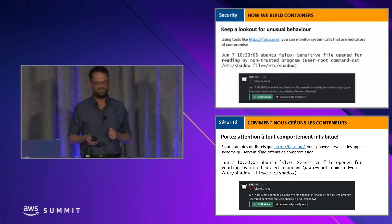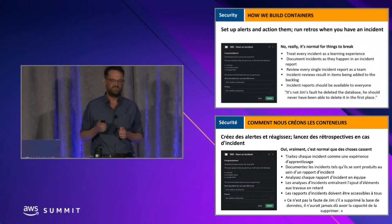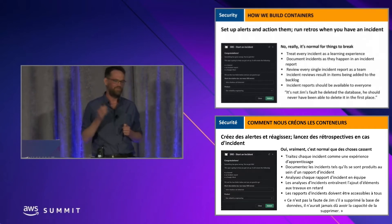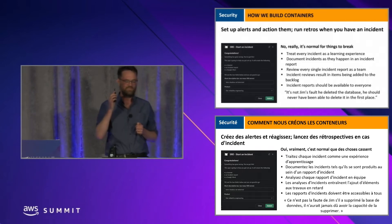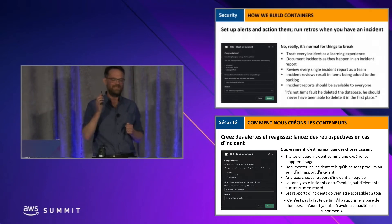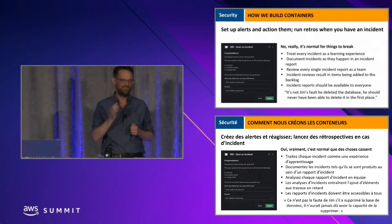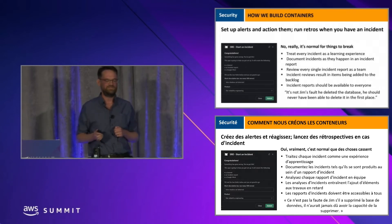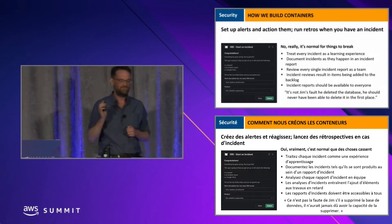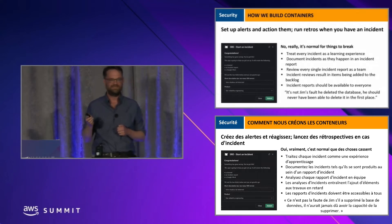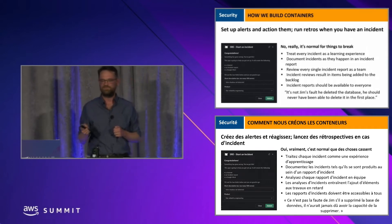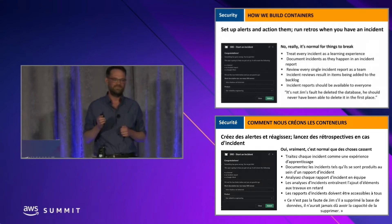My last recommendations are probably the most important: set up alerts and action them. When there is an alert, run retros, and please make it a blameless post-mortem. It's normal for things to break. Treat every incident as a learning experience. Document incidents as they happen in an incident report, review every single incident report as a team, and incident reports should be available to everyone. We have a saying at CDS: it's not Jim's fault he deleted the database — he should never have been able to delete it in the first place. We take responsibility away from the individual and put it on the organization, because it is in the organization's power to fix these issues.